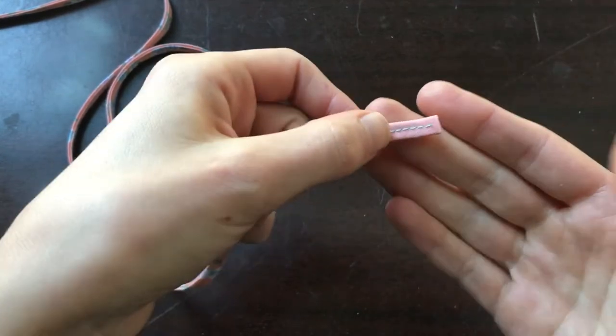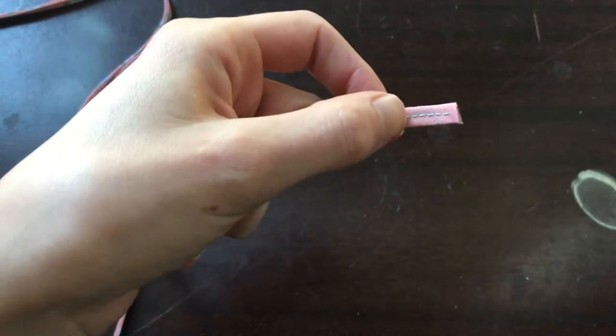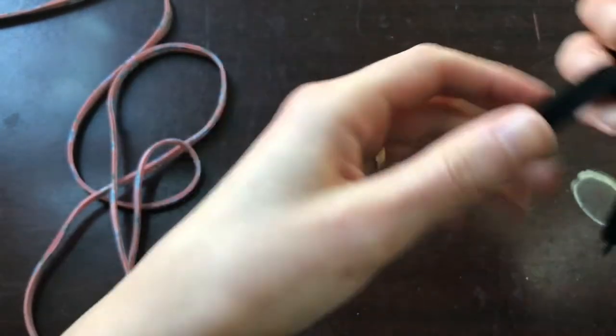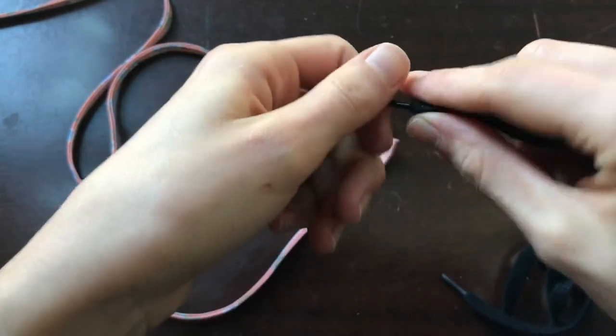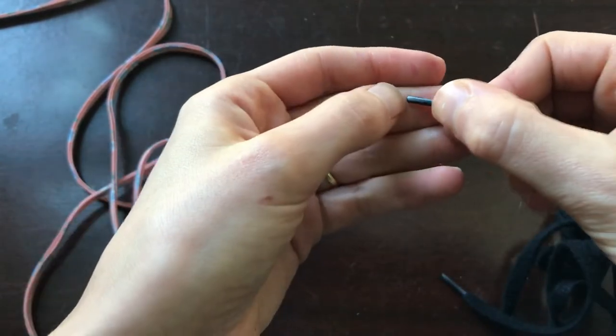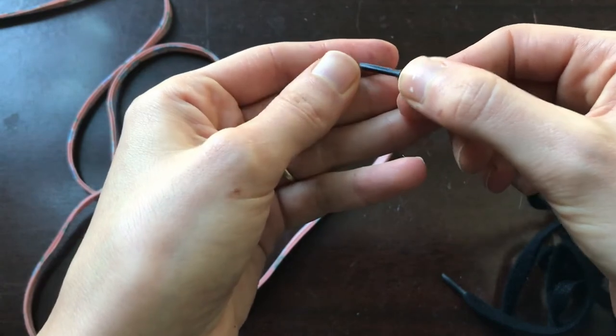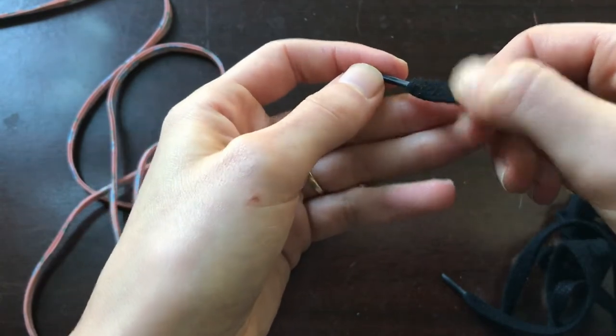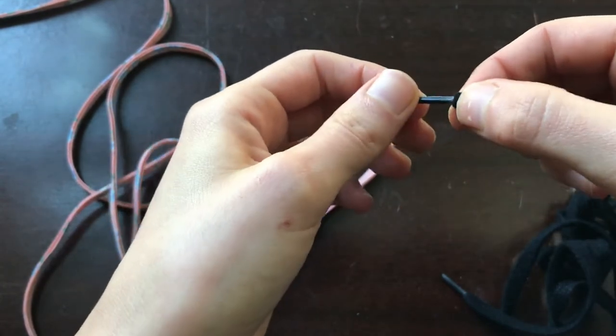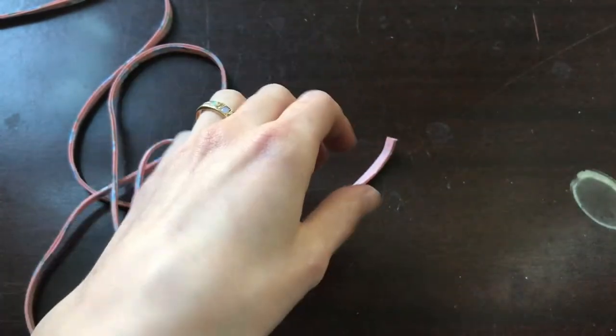So next we need to finish the ends. If you look at store-bought shoelaces, the little plastic or metal end here is called the aglet. This just keeps the shoelace from fraying. So we can pretty easily make one at home.